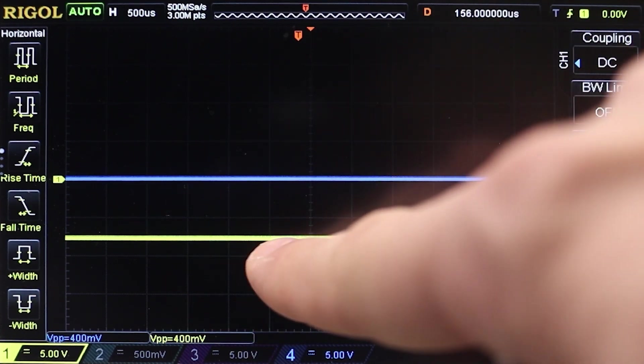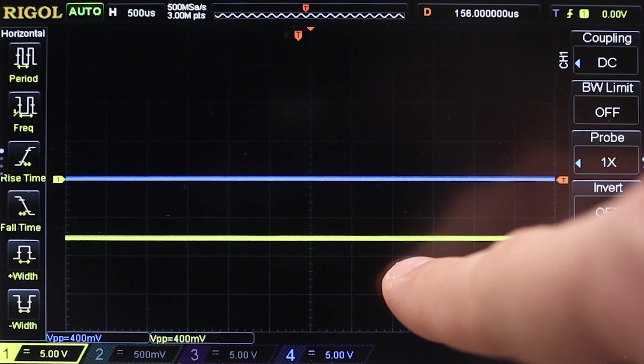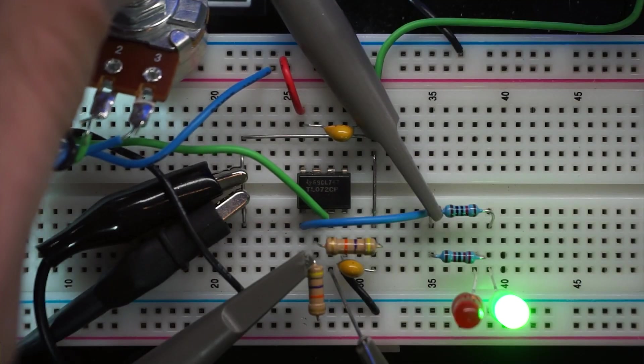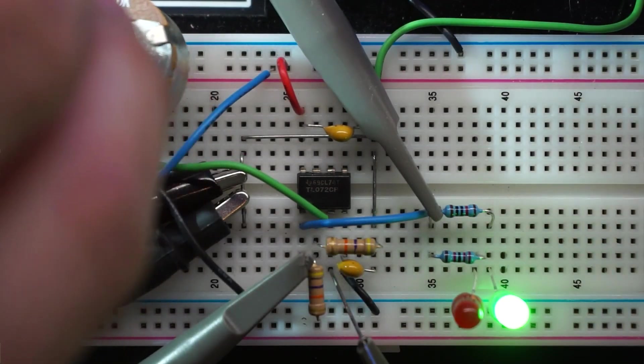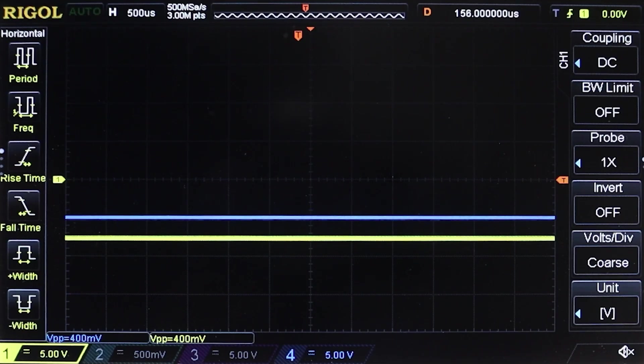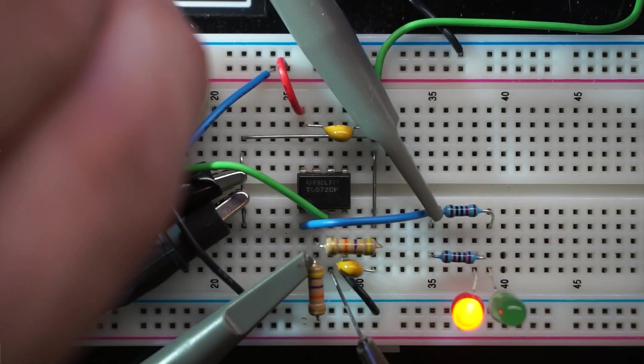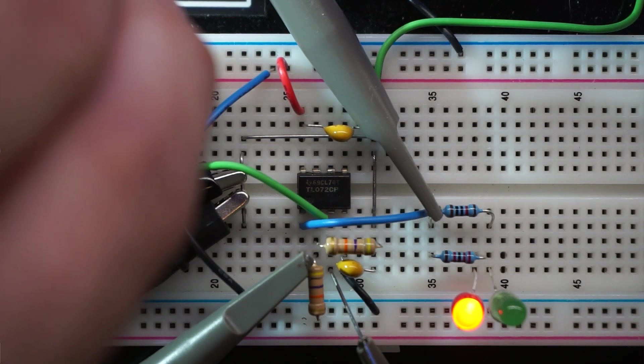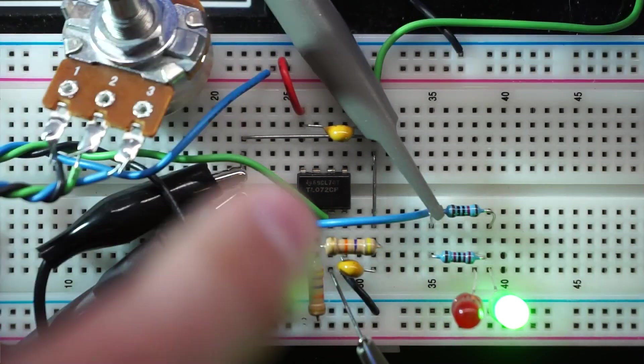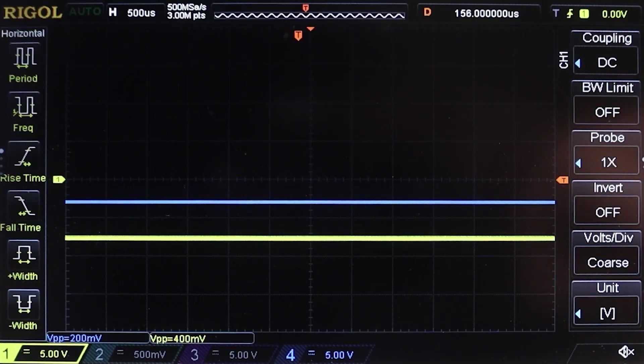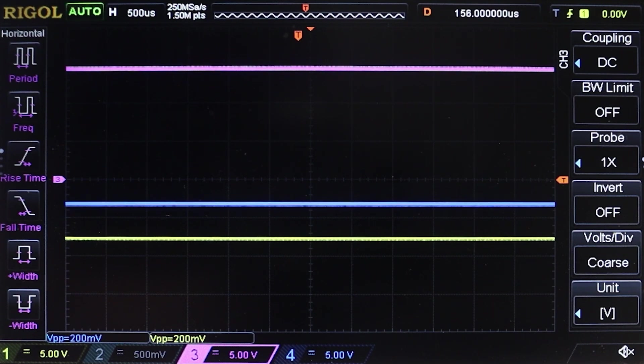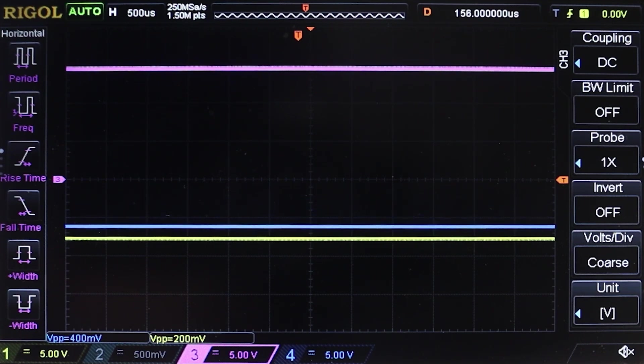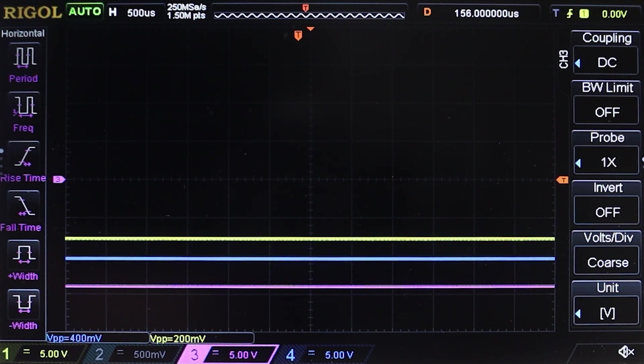I'll monitor the potentiometer using this probe and the output of the op-amp using this probe. At the scope, I have my reference voltage about a volt above the negative rail, and the blue trace shows my potentiometer. As I vary it, I can go over and under that reference. On the breadboard, if I'm above the reference, it's green, and as I cross the threshold, it turns red. With this probe monitoring the output, you can see we're high when green, and when I go below the threshold, the purple trace goes low.